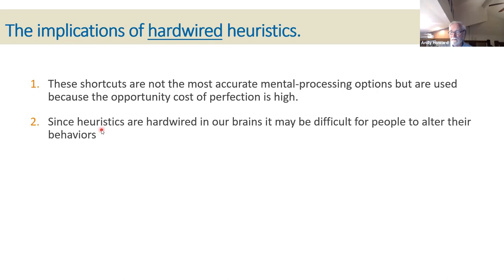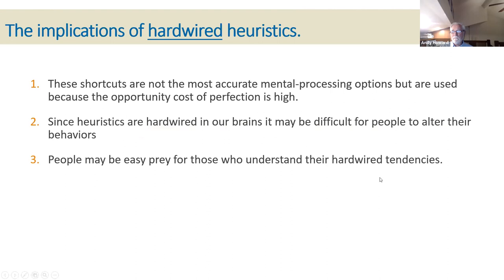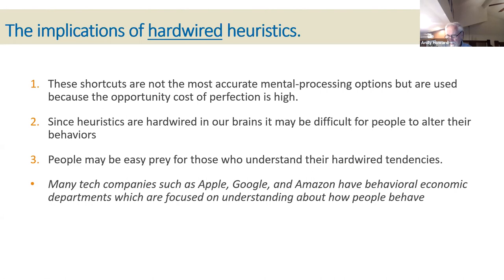Here's a real problem: since these heuristics or shortcuts are hardwired in our brains, it may be difficult for people to alter their behavior — it's really, really tough to get a person to change. And people may be easy prey for those who understand their hardwired tendencies. As a sidelight, many tech companies today such as Apple, Google, and Amazon have behavioral economics departments focusing on understanding how real people behave in the real world.